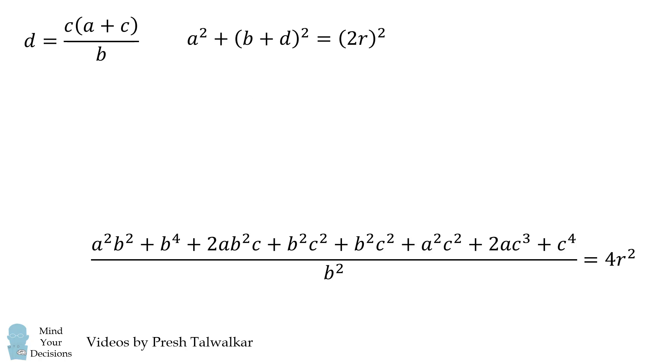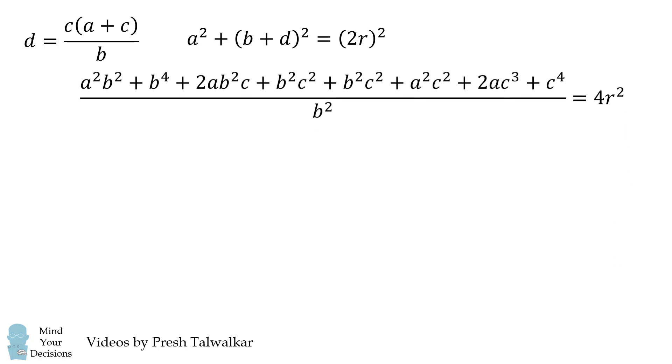Now, how are we going to simplify this expression? Well, look at the first four terms in this expression. We can factor out a B squared and we get the following four remaining terms. A squared plus B squared plus 2AC plus C squared. And this will simplify to be B squared plus A plus C the quantity squared.